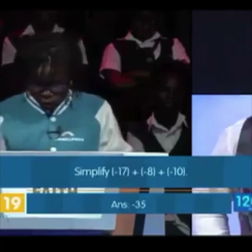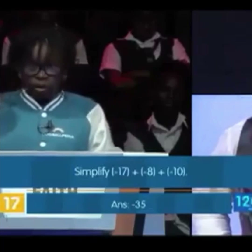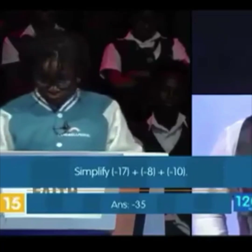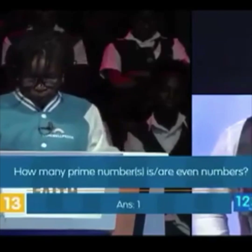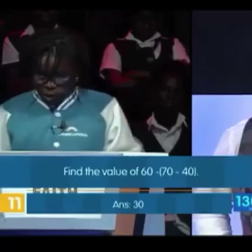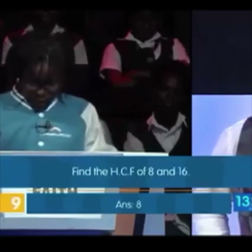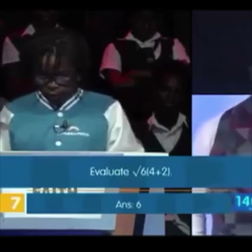Simplify minus seventeen plus minus eight plus minus ten: minus thirty five. Correct. How many prime numbers? One. Correct. Find the value of sixty minus seventy minus forty: thirteen. Correct. Find the HCF of eight: eight. Correct. Evaluate the square root of six bracket six plus two. Correct.